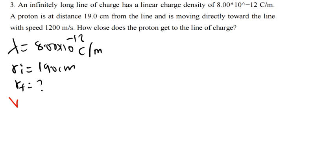The velocity initially is the initial velocity. The proton is moving directly toward the line with a speed of 1200 meters per second. When the proton gets as close as possible to the line of charge, it will stop moving. So the final speed is zero, and we want to find the final distance at that point.